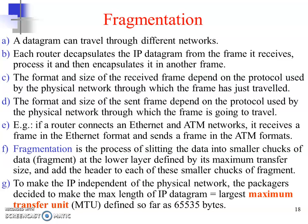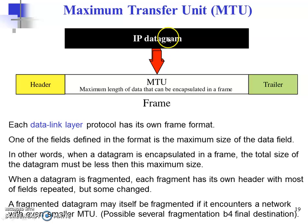The purpose of fragmentation is to make IP independent of the physical network. When a data frame is encapsulated, the total size of the datagram must be less than the maximum transmission unit size. When the datagram is fragmented, each fragment will have its own header.